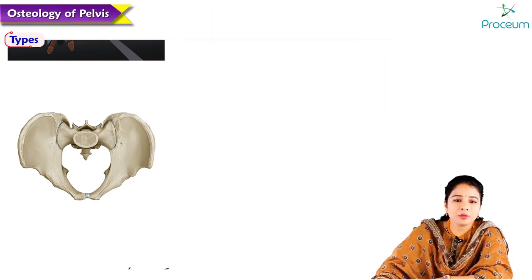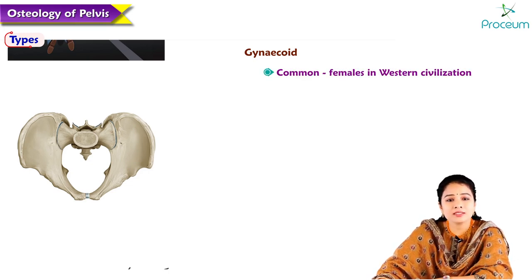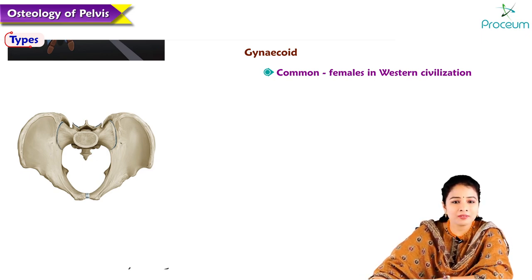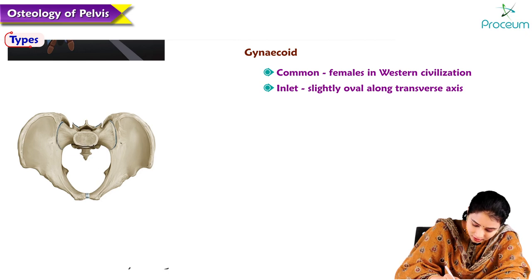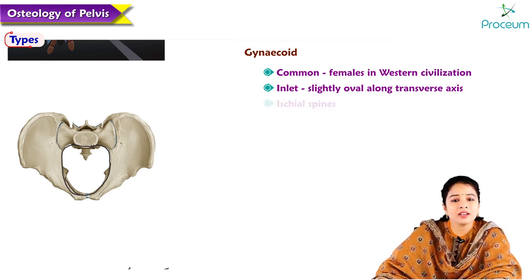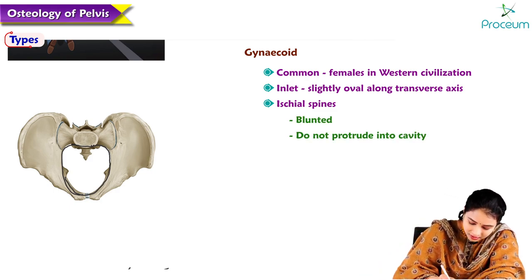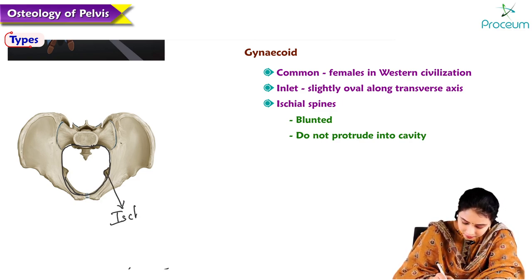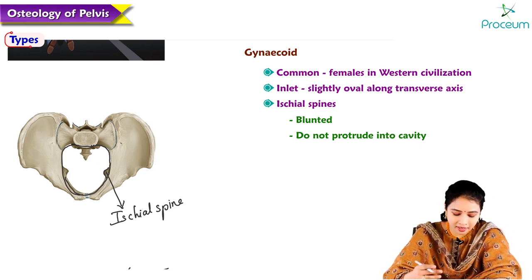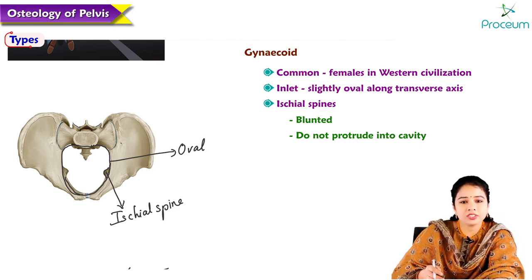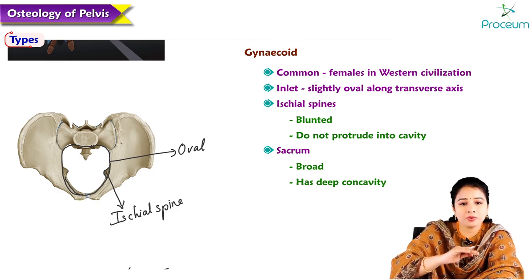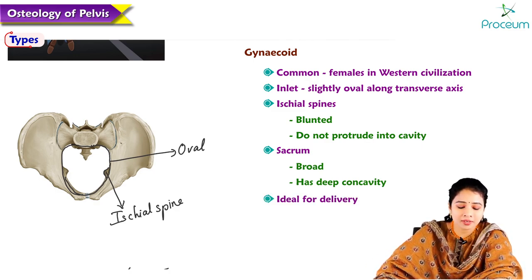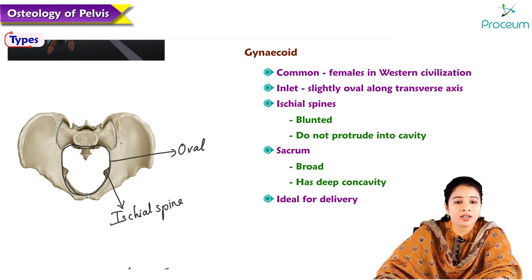The gynecoid pelvis is the most common type among females in western civilization. The inlet is slightly oval along the transverse axis. The ischial spines are blunt and do not protrude into the cavity, and the sacrum is broad with a deep concavity — making the gynecoid pelvis the most ideal kind of pelvis for normal delivery.